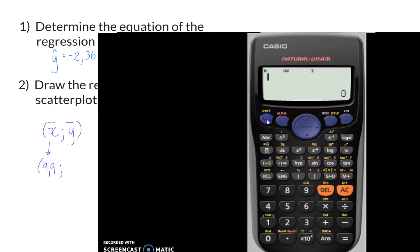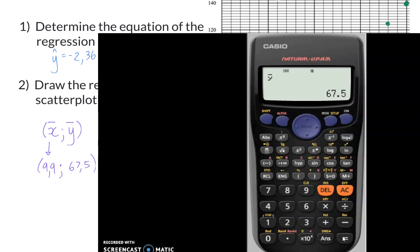And if I go back to my stat option, and I choose variance again, option 5 will give me the mean for the second set of data, which is the salary, and this will be 67 comma 5.